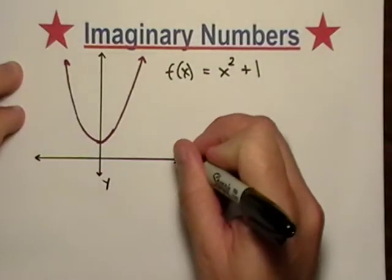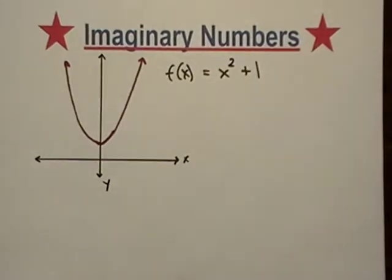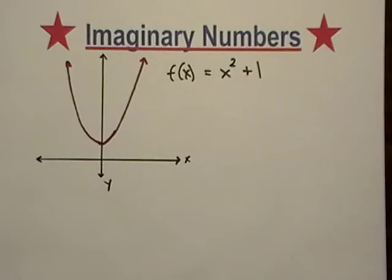Okay, say here's imaginary numbers. Let's say I have a function and I want to find out the zeros of this function. So I want to figure out where this thing is equal to zero.